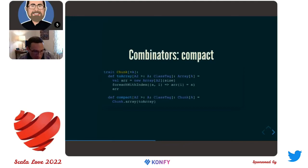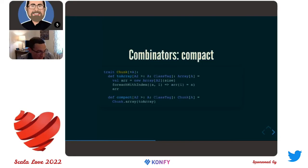There are times where we need that compacting behavior — we want to map things over a chunk but still have a primitive array backing everything. In which case, we can just add that as a separate orthogonal operation, which is completely separate from all the other operations on Chunk. We have a function called `toArray`, which allocates that array using a ClassTag constraint — so the only time you'll encounter this ClassTag constraint is when you're explicitly calling `toArray` or compacting.